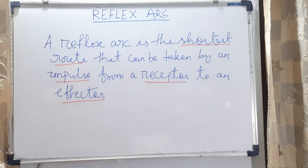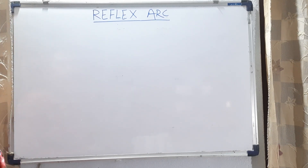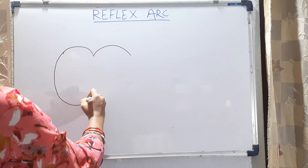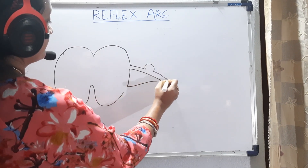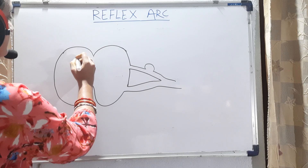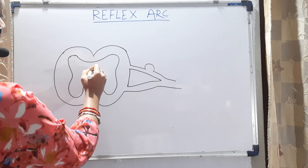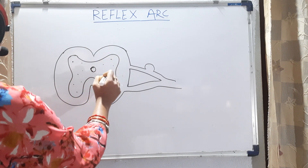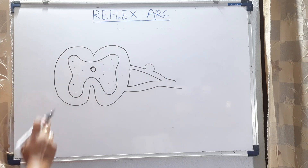Let us know how to draw the figure of the reflex arc. To show the reflex arc, we have to draw the diagram of the cross-section of the spinal cord. This is the section of the spinal cord. Let us show the grey matter. At the center is present the central canal. This is the white matter and this is the grey matter of the spinal cord.